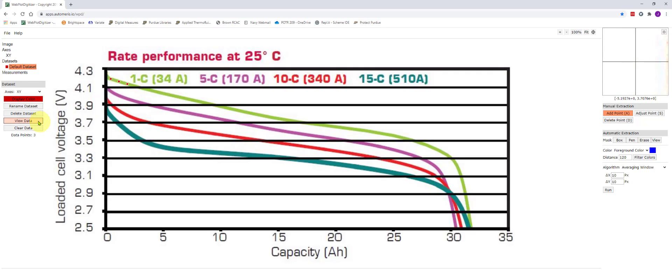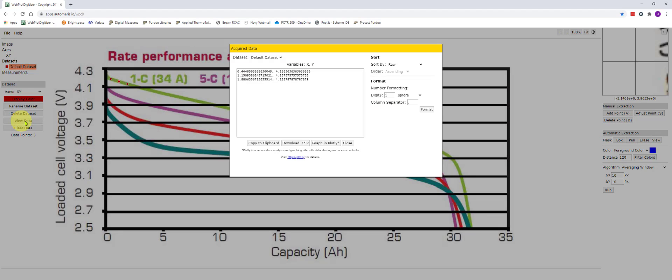If I want to view the data that I have digitized I click on view data over here on the left side. And I get a comma separated value list of the points that I've selected. The x and y coordinates. So I see the capacity in ampere hours and the voltage.